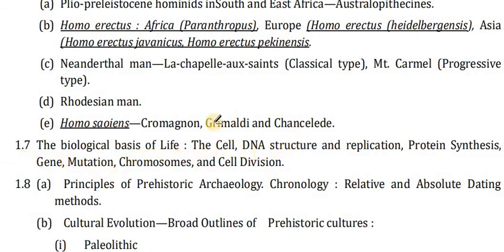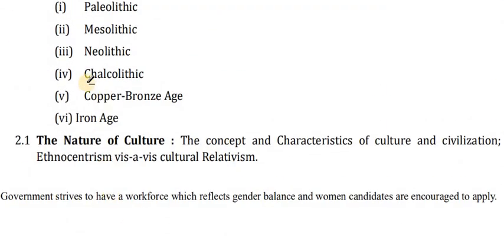Point 1.7 covers the biological basis of life: DNA structure and replication, proteins, genes, mutations, chromosomes, and cell division. Point 1.8 is the principles of prehistoric archaeology: chronology — relative and absolute dating methods — and cultural evolution with a broad outline of prehistoric cultures: Paleolithic, Mesolithic, Neolithic, Chalcolithic, Copper-Bronze Age, and Iron Age.